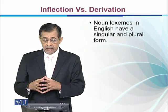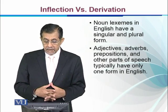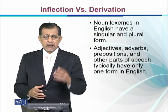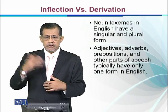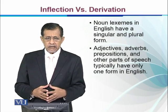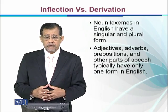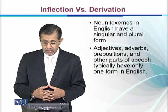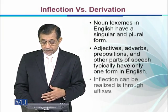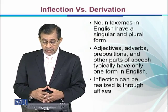Noun lexemes in English have a singular and plural form. Adjectives, adverbs, prepositions, and other parts of speech typically have only one form in English — we cannot make 'good' into 'goods' without changing the class. Similarly, we do not give plural forms to adverbs and prepositions, so they generally don't have inflected variants.